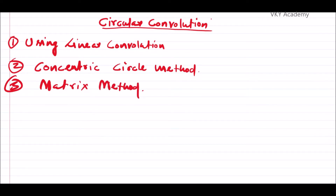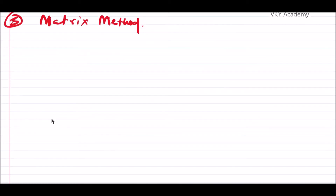The matrix method used for determining circular convolution is different from the matrix method used for determining linear convolution. In this video lecture, we will discuss the first method — using linear convolution — which is the easiest method for determining circular convolution. We will understand the concept by the help of one example.